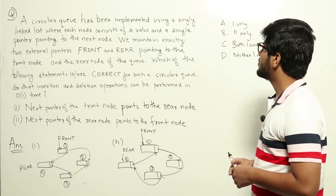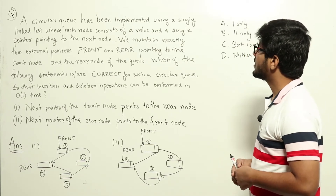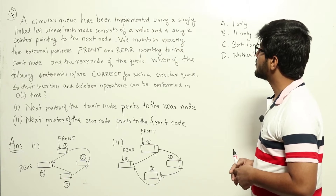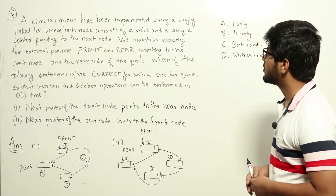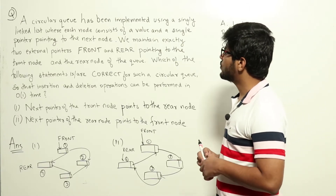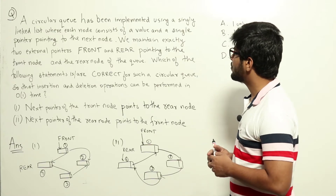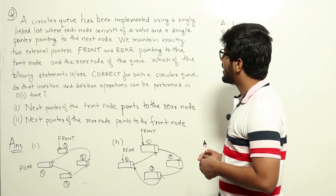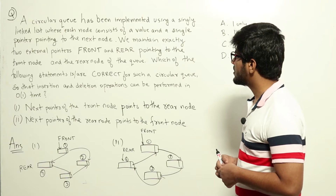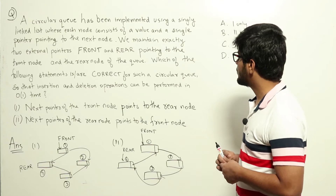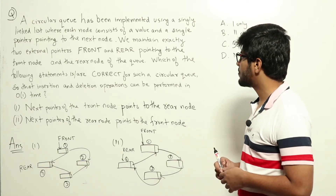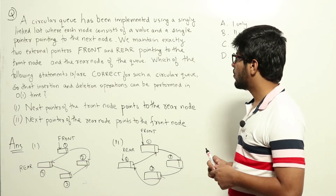A circular queue has been implemented using a singly linked list where each node consists of a value and a single pointer pointing to the next node. We maintain exactly two external pointers — front and rear — pointing to the front node and the rear node of the queue. Which of the following statements is or are correct for such a circular queue so that insertion and deletion operations can be performed in O(1) time?